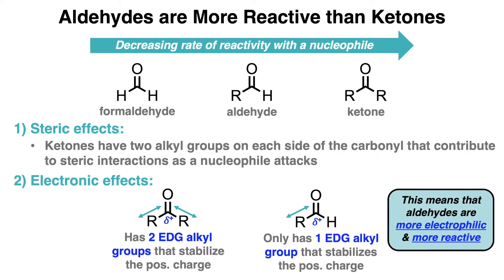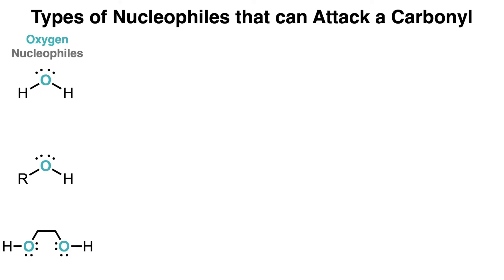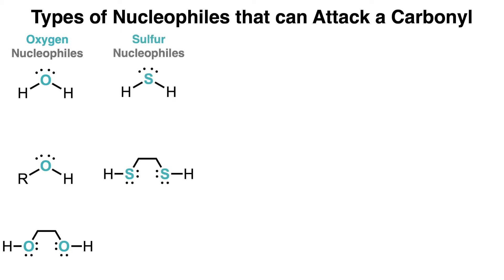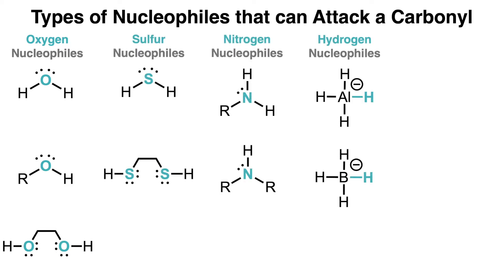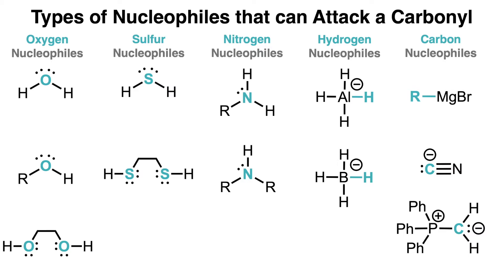Aldehydes and ketones react with a wide variety of nucleophiles that can be classified by the nature of the attack atom. We are going to look at nucleophiles based on oxygen, sulfur, nitrogen, hydrogen, and carbon nucleophiles. For the remainder of this video, we are going to focus on only oxygen nucleophiles attacking aldehydes and ketones.